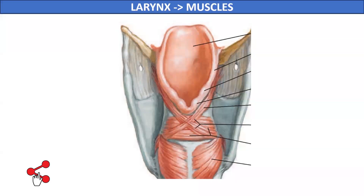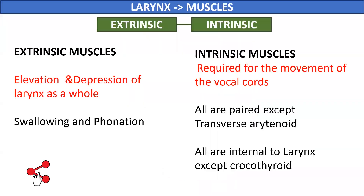We will study the muscles of the larynx. The muscles of the larynx are divided into two broad groups: the extrinsic and intrinsic muscles. Extrinsic muscles are required for elevation and depression of the larynx as a whole, and these movements are needed during deglutition, though some change in quality and pitch of sound may occur. Intrinsic muscles are required for movements of the vocal cords during phonation and respiration.